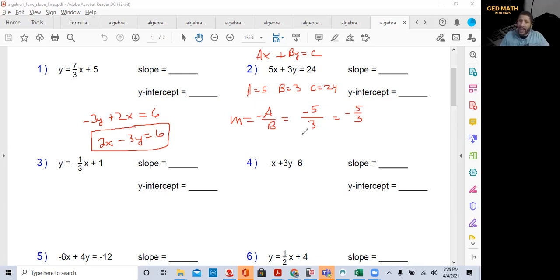Now let's find the y-intercept. So b is equal to c over b. Your slope was negative a over b. Your y-intercept is c over b. So my c is 24, my b is 3. 24 divided by 3 is 8. So my y-intercept is 8.